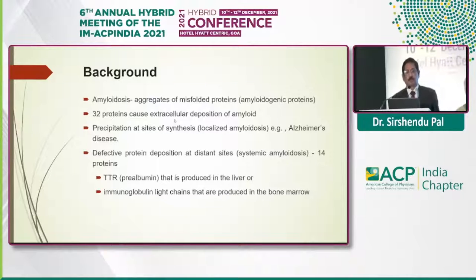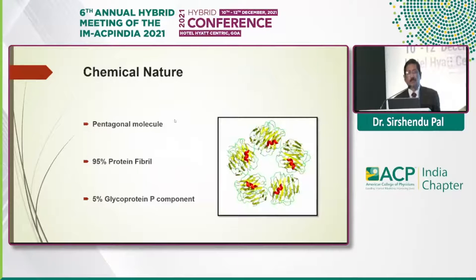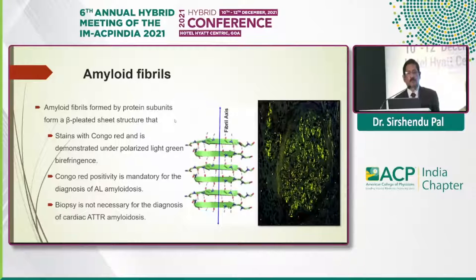Going back to basics, amyloidosis is nothing but aggregates of misfolded proteins which get deposited in organs. The deposition may be localized — that is, at sites of synthesis — or it may be systemic, at distant sites. The localized commonest one is Alzheimer's disease and myeloma. Distant ones include transthyretin produced in the liver and immunoglobulin light chains produced in the bone marrow. Chemically, it's a pentagonal molecule composed of 95 percent protein fibril and 5 percent glycoprotein P-component. These fibrils form protein subunits which form a beta-pleated sheet structure.